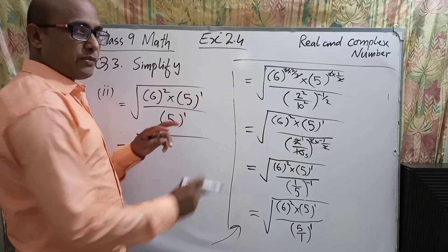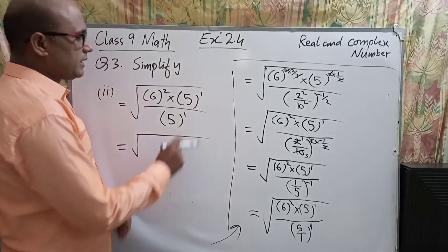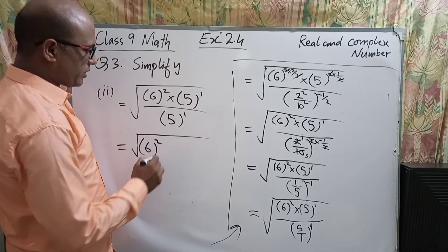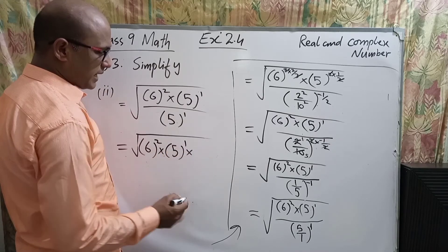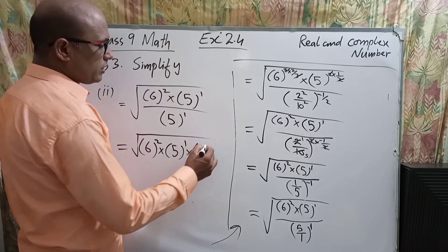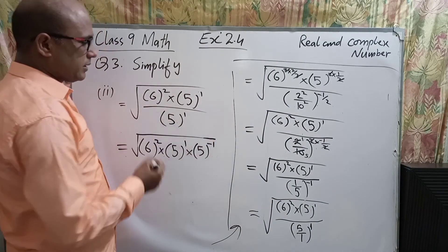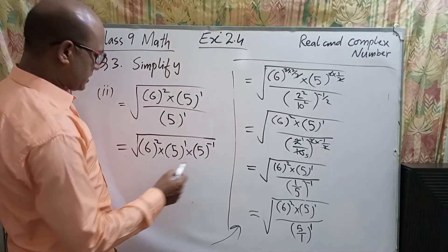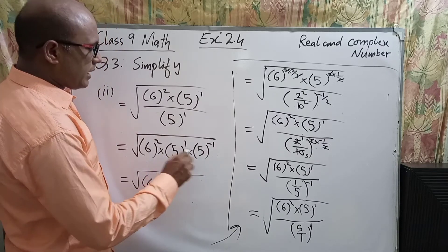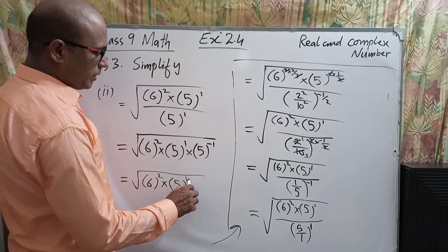When we shift a denominator into the numerator, its exponent sign changes. So 6 power 2 multiplied by 5 power 1 remains the same, and the denominator shifts into the numerator getting a minus sign. Since both numbers are 5, their powers are added: 1 + (−1).